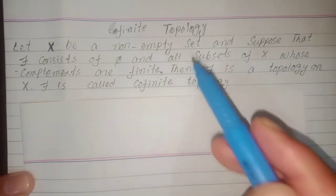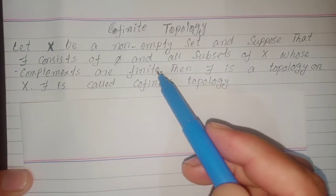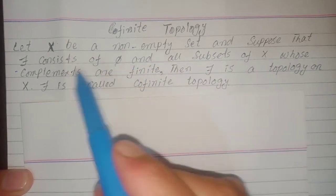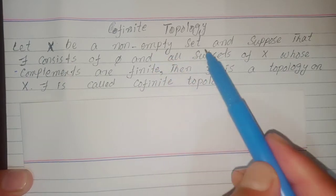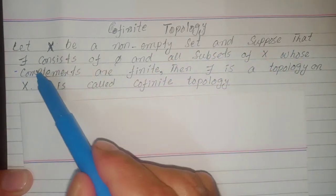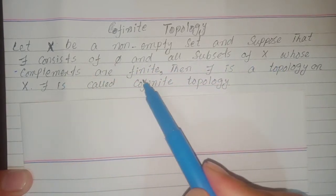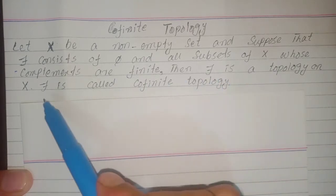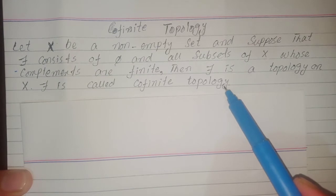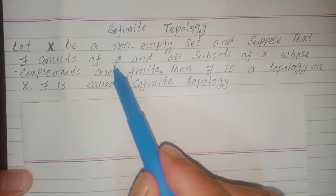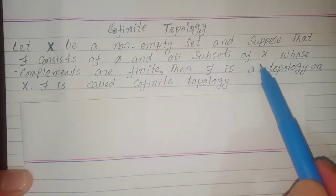Welcome students. Today's topic is co-finite topology. First we define this topology and then we prove it. Co-finite topology is defined as: let X be a non-empty set and suppose that τ consists of φ and all subsets of X whose complements are finite. Then τ is a topology on X. This topology is called co-finite topology.